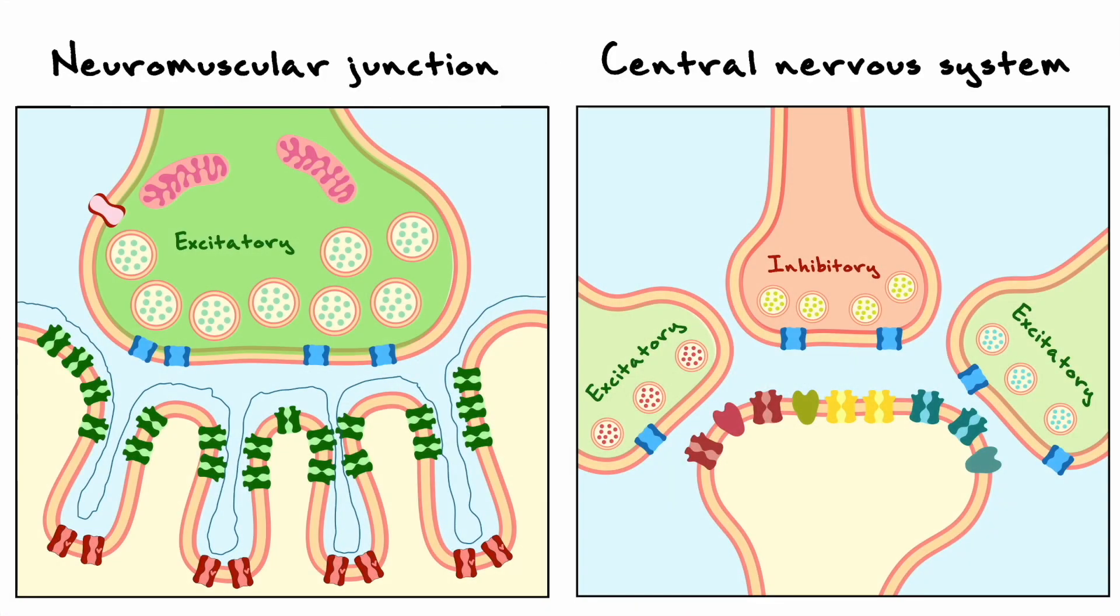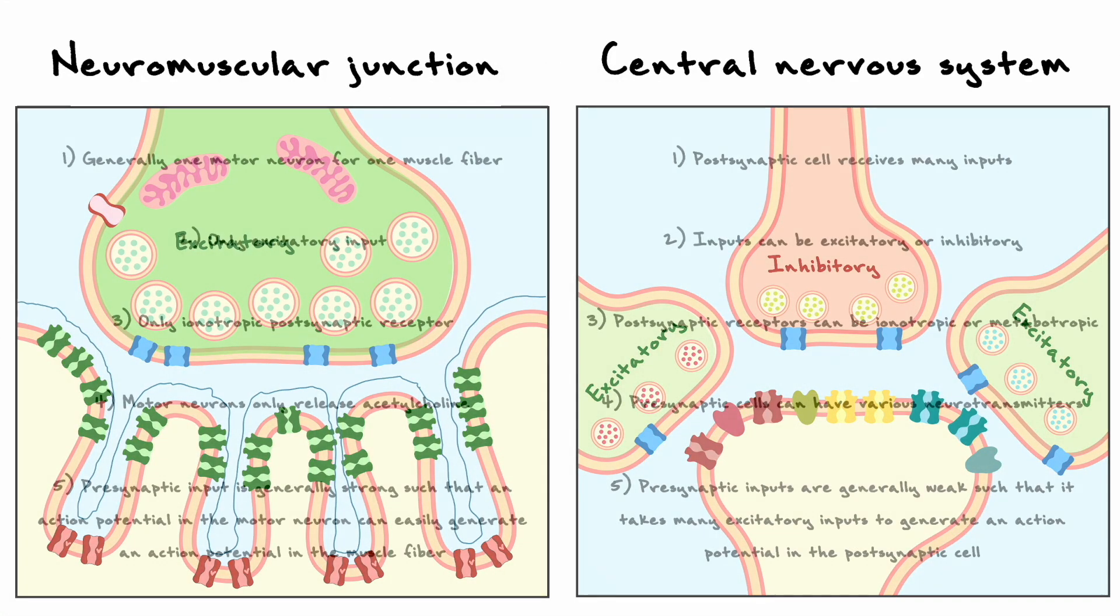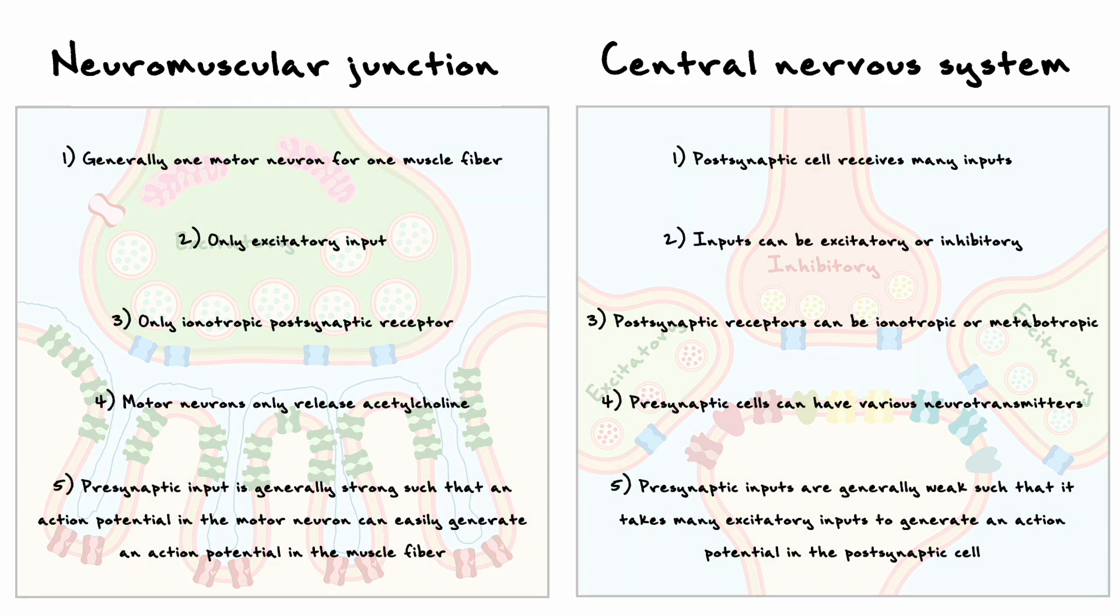Alright, now back to the schematic where we've established the differences between the neuromuscular junction and the neurons in the central nervous system. We have two final but very complex differences to discuss.